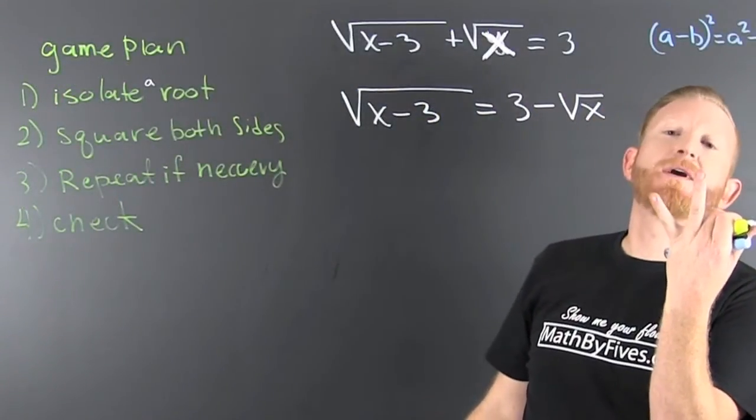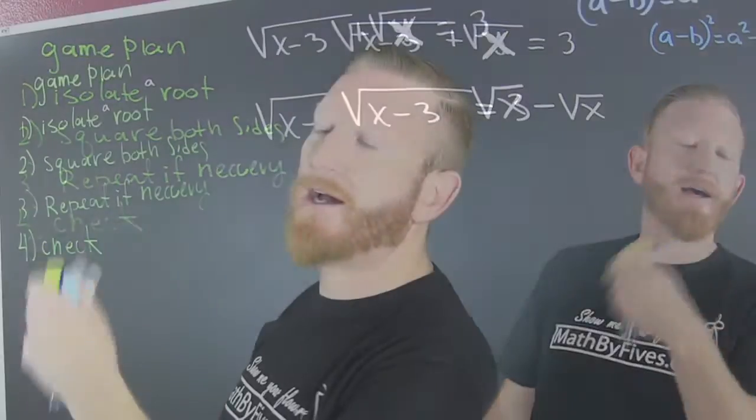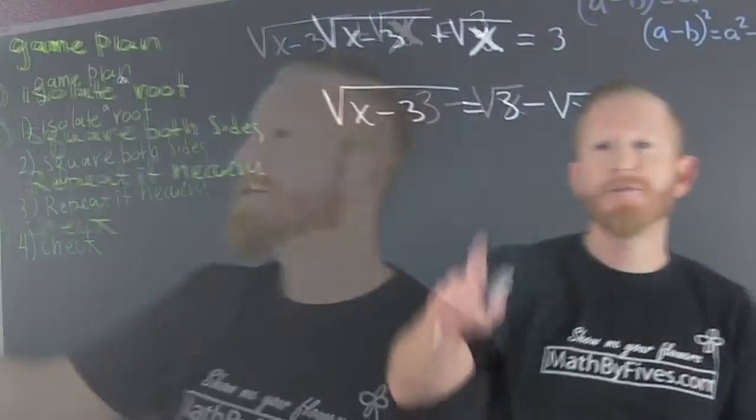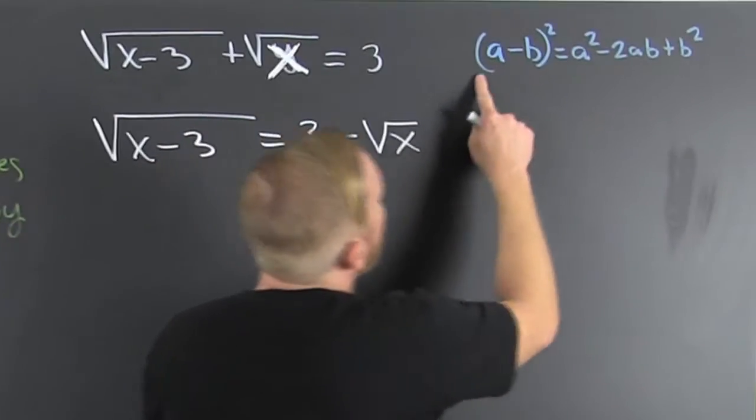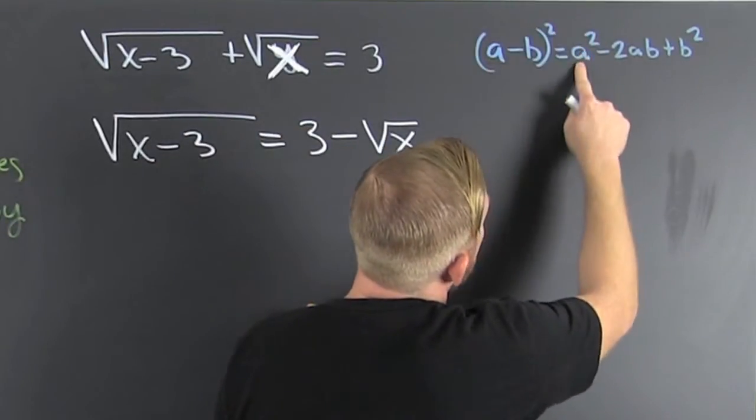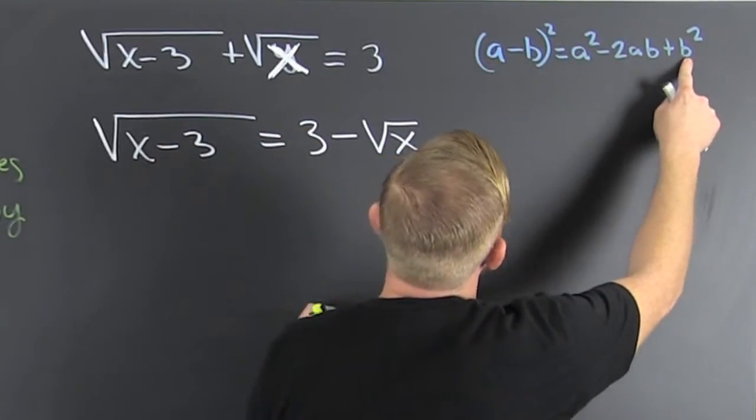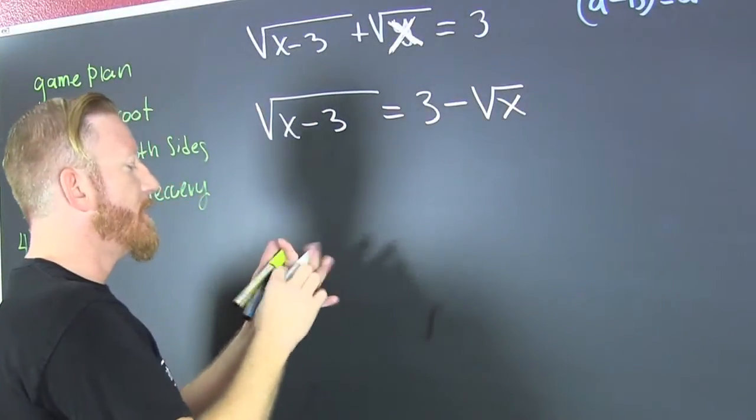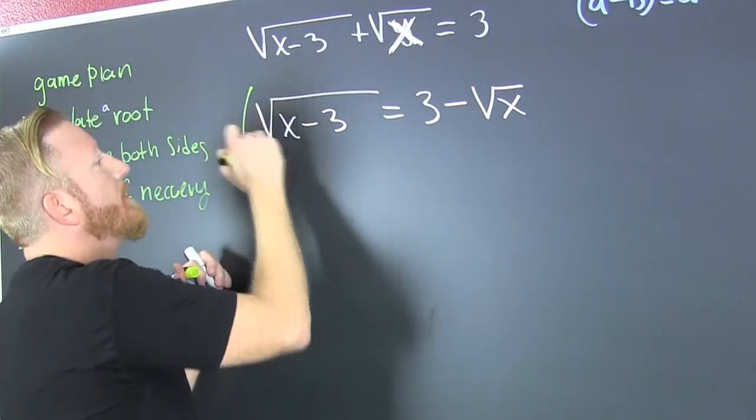Step 2: we're gonna square both sides. When we're squaring both sides, we're gonna use this form: (a - b)² = a² - 2ab + b². It's one of your special products.